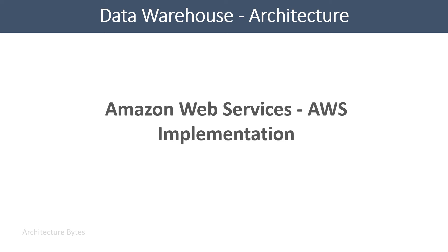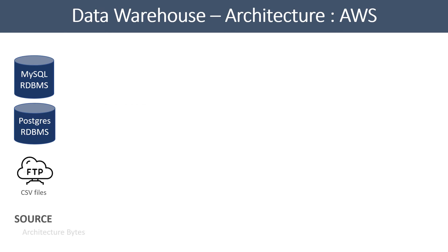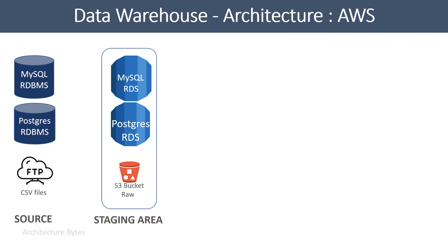Now let us see how this data warehouse would be implemented in Amazon Web Services. Here is our source: a MySQL RDBMS, a PostgreSQL RDBMS, and an FTP server with CSV files. The staging area has MySQL and PostgreSQL RDS instances and an S3 bucket to store any raw files. The easiest way to extract and load data from source databases into staging databases is to replicate the databases.